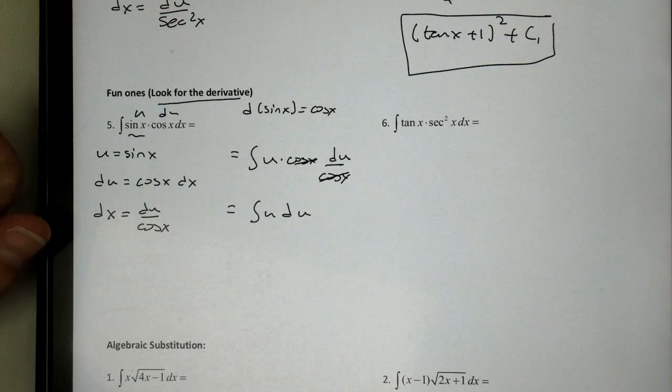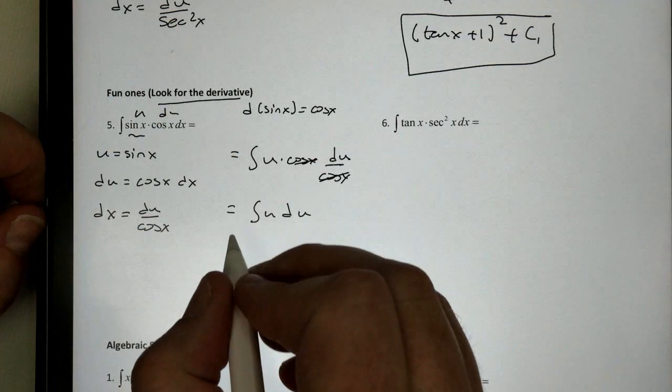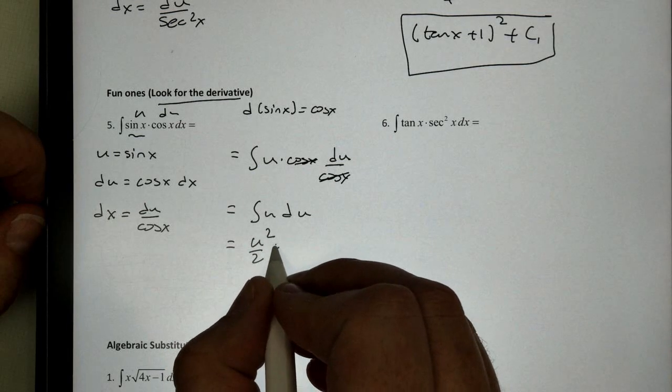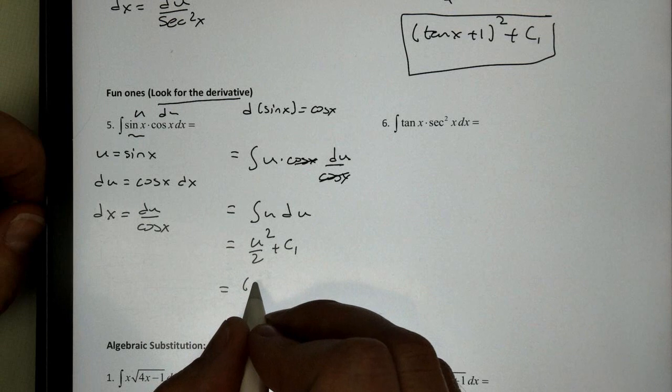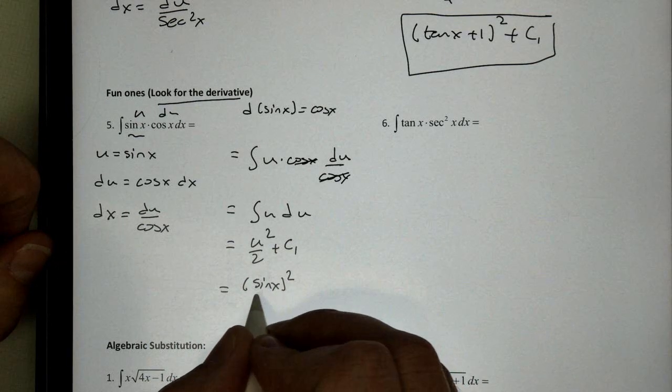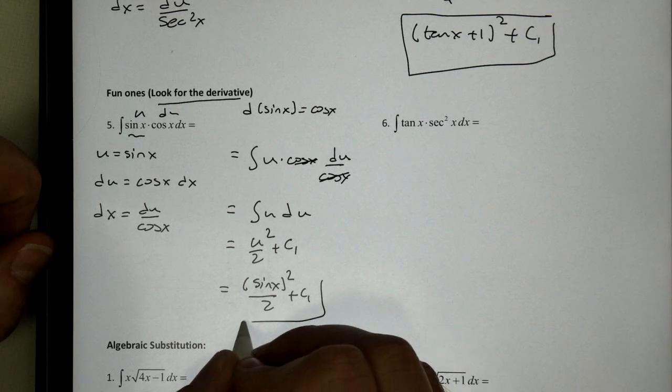The derivative is cosine. And now if I integrate this, we would get u squared over 2 plus c1. And then I just plug in. What is u equal to? u is sine of x. We would get sine of x squared over 2 plus c1. And there's our answer.